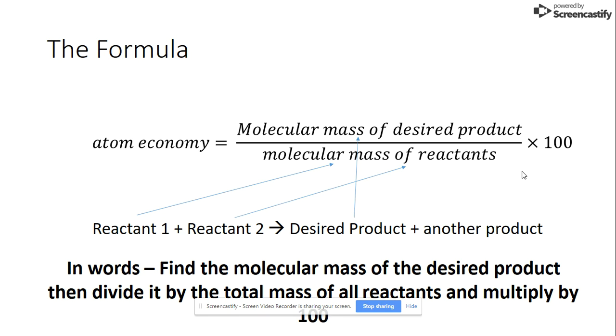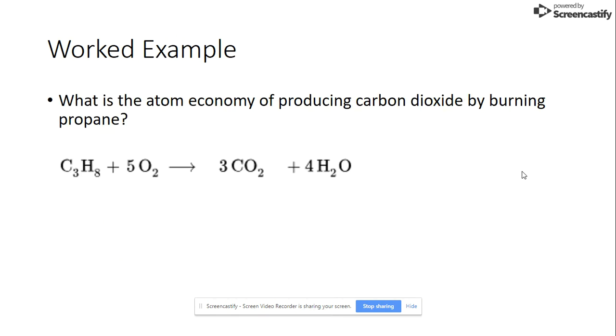And now let's do a worked example to see that in practice. So our worked example is what is the atom economy of producing carbon dioxide by burning propane.